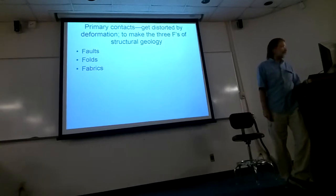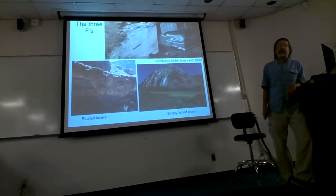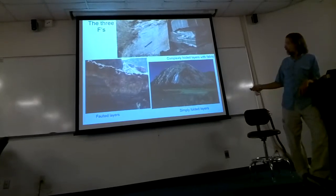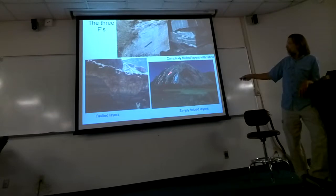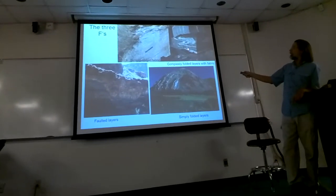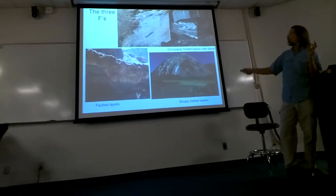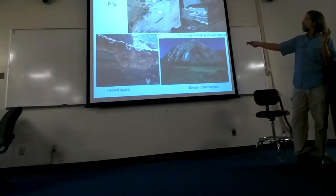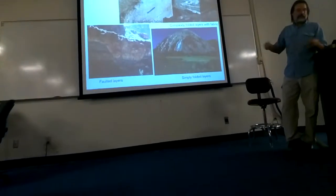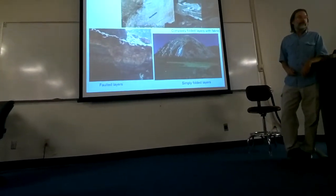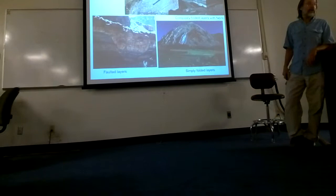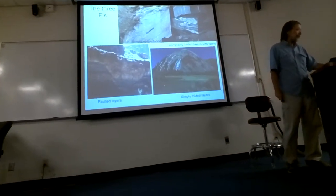We'll talk about all three as we go through this class. Here are examples of the three Fs. There's a fault where materials are displaced by motion on a linear discontinuity. Folding, where layers are worked around to make a larger-scale feature. And the third type are fabrics — these objects have been stretched out like pulling bubblegum, where the rocks are drawn out by solid-state flow within the material. Faults occur in your surface environment; fabrics occur during metamorphism.